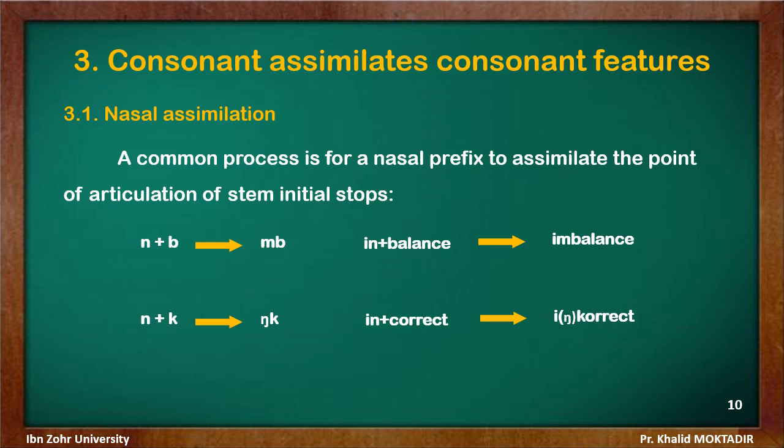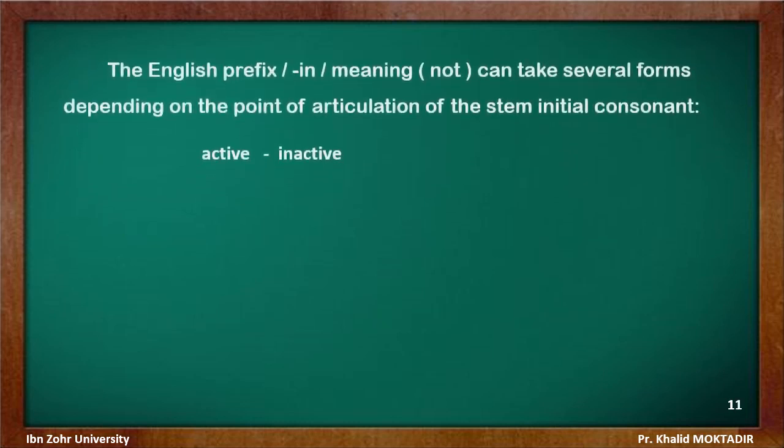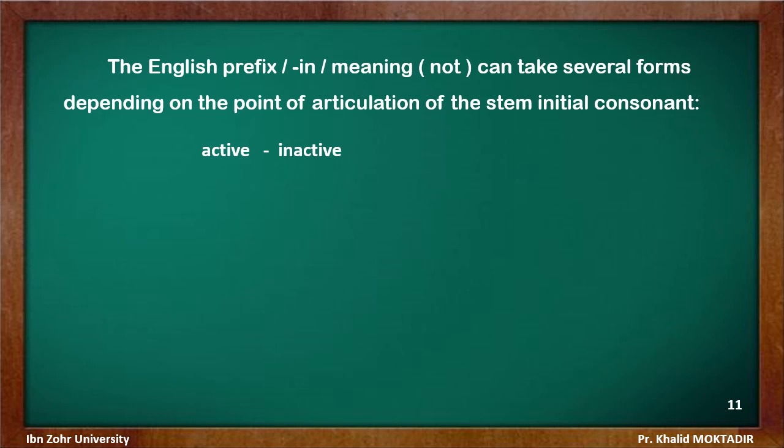Look at how the alveolar nasal becomes velar when followed by the velar consonant K — 'incorrect.' Most people would pronounce this as 'incorrect,' though another pronunciation is also possible. Now look at the English prefix 'in-,' meaning 'not,' which can take several forms depending on the point of articulation of the first consonant in the word.